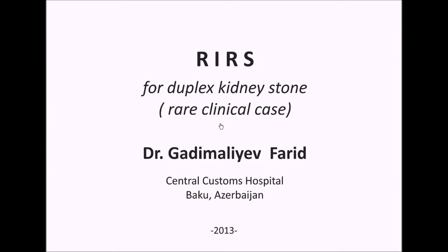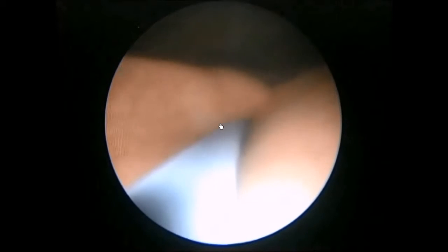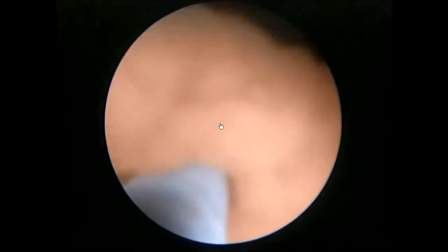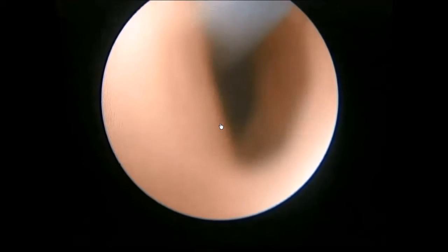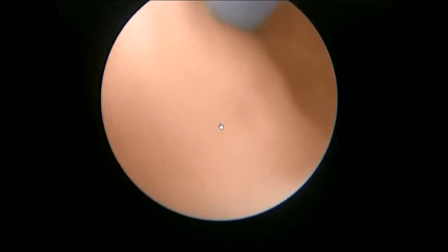In this video we present a rare case of retrograde lithotripsy in duplex kidney. Using an EIA flexible ureteroscope, you can see a guide wire being passed through the ureter to the left kidney.